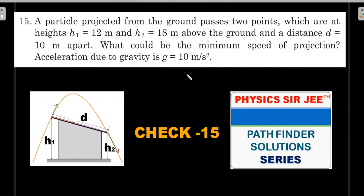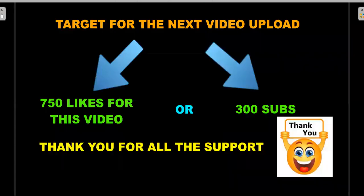Here we move ahead with the formal reading: a particle projected from the ground passes two points which are at heights h1 and h2 above the ground and distance d apart. The parameters are different, so I will solve it in terms of parameters and only substitute at the end. The question asks: what could be the minimum speed of projection in terms of these parameters and g?